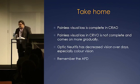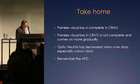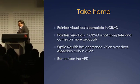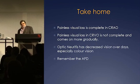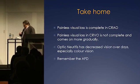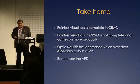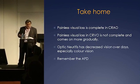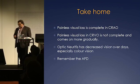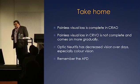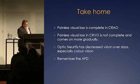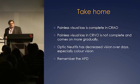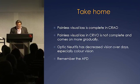The take-home: painless loss of vision — when it's complete, you've got to start thinking of central retinal artery occlusion. When it's not complete and happens over a slower period of time, think of vein occlusion. When they've got vein occlusion there's very little you can offer them. Remember the afferent pupillary defect — check that bouncing Marcus Gunn pupil, because if you get that it means something quite significant is occurring.